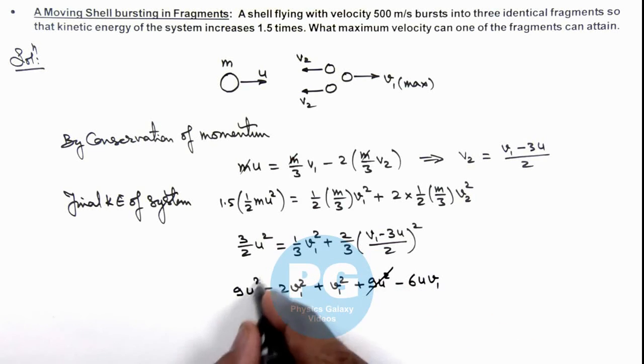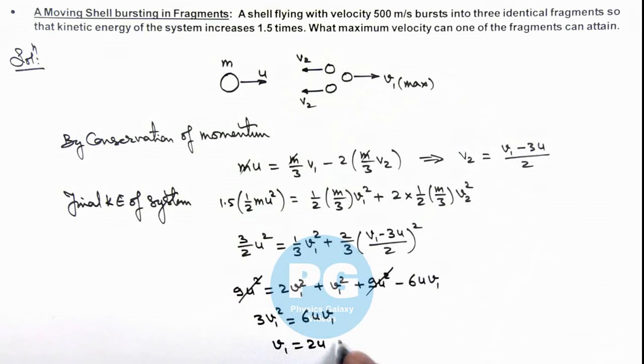Here this 9u² can be cancelled out, and on simplifying this gives us 3v₁² equal to 6uv₁. Here one v₁ can again be cancelled out, and the value of v₁ we are getting is 2u. As the value of initial speed is 500 meters per second, 2 into 500 comes out to be 1000 meters per second. That will be the result of this problem, the maximum speed which one of the particles can attain after bursting of this shell.